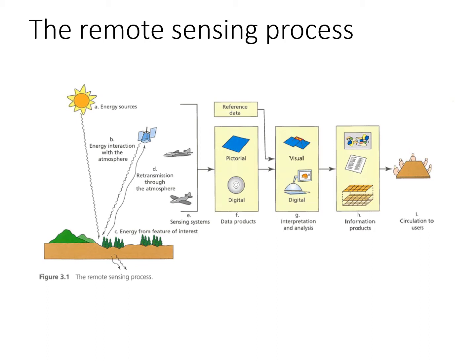On the left, you see the observations that we make. You can see A there next to the sun — that's an energy source. Most of remote sensing that we do uses the sun as an energy source. You can see B — there's some interaction between that energy and the atmosphere. Light travels through the atmosphere and down to the surface of the Earth, and then there's some fraction of that energy that is reflected from a feature of interest.